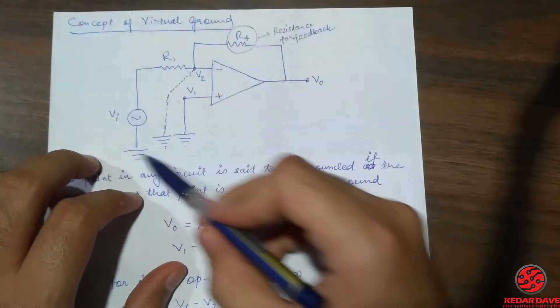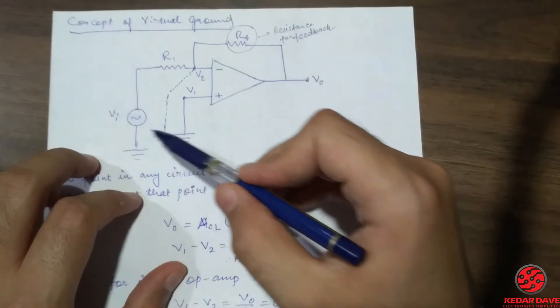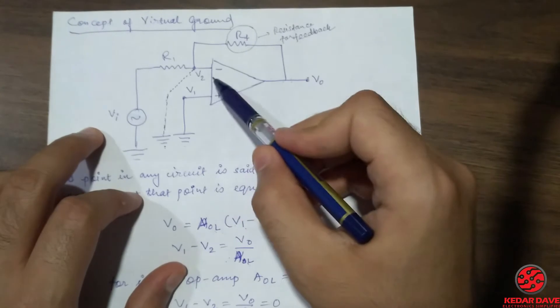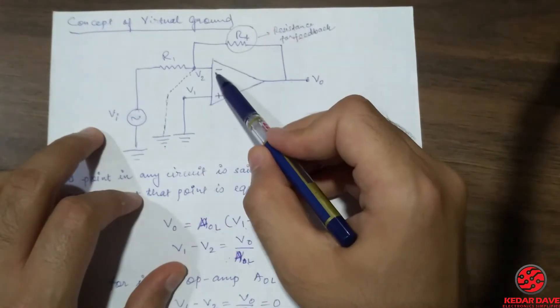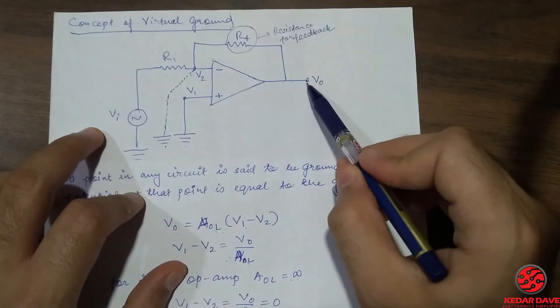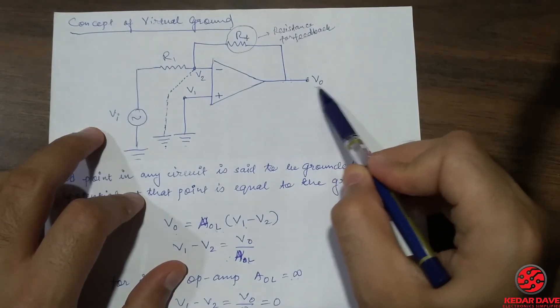So here you can see one configuration is drawn over here. What we are doing is we are providing one input to the inverting terminal of the operational amplifier and one output is taken at the output terminals that is denoted as VO.